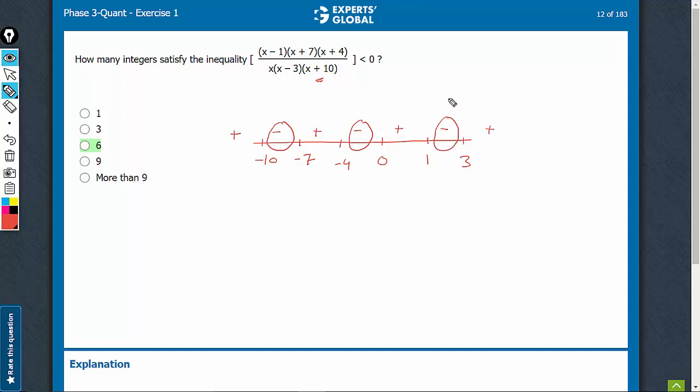Between 1 and 3, there is only one integer, 2. Between minus 4 and 0, the three integers are minus 3, minus 2, minus 1.